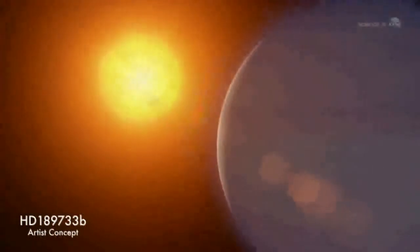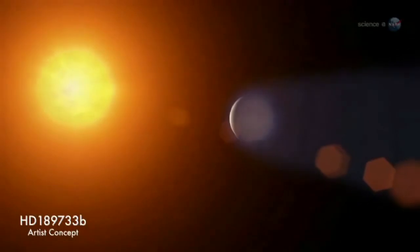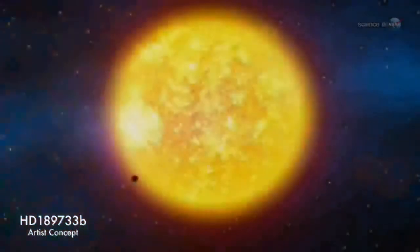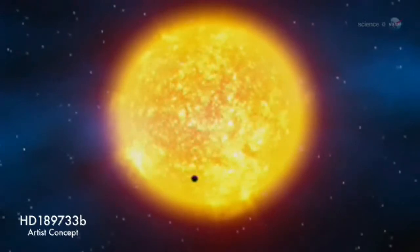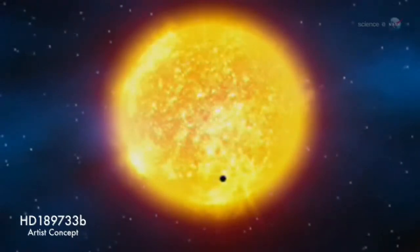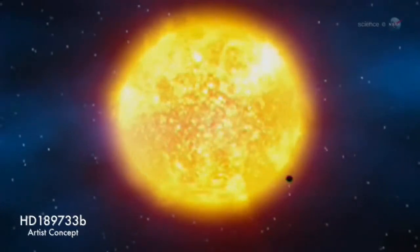Consider the case of HD 189733b, discovered in 2005 by a team working at the Haute Province Observatory in France. Because it is nearby, only 63 light-years away, and because it blocks a whopping 3% of light from its orange dwarf parent star, astronomers are rapidly learning a great deal. For one thing, it's blue.